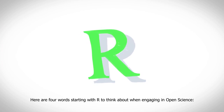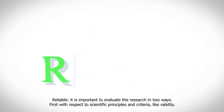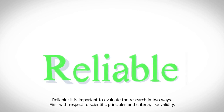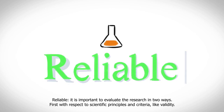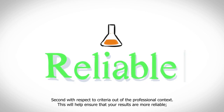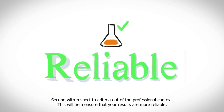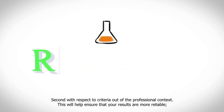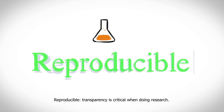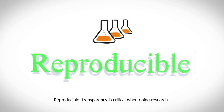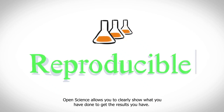Here are four words starting with R to think about when engaging in open science. Reliable: it is important to evaluate the research in two ways — first with respect to scientific principles and criteria like validity, and second with respect to criteria from the professional context. This will help ensure that your results are more reliable.